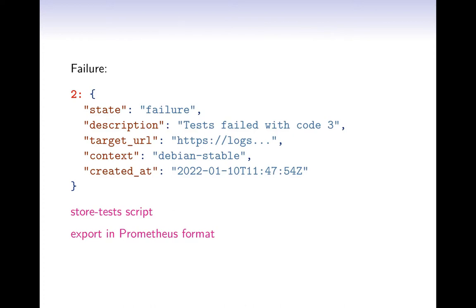Once the test finishes, the state changes to success or failure. Since the status API records the entire history, when we see a failure go back to 'in progress' and eventually 'success', we can deduce that was a retry and tally it accordingly. We have a store-test script that reads and interprets this history for merged PRs and puts it into a SQLite database. We also regularly run SQL queries on the database to calculate current indicator values and export them in Prometheus text format.